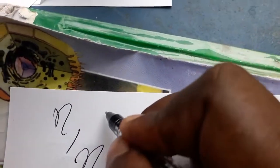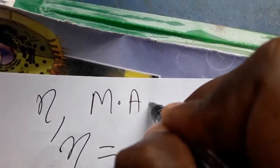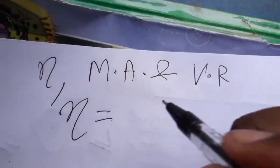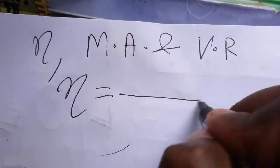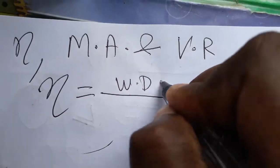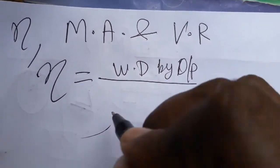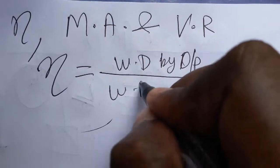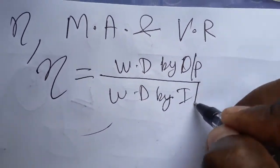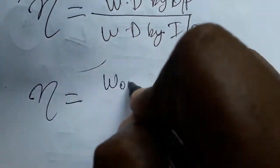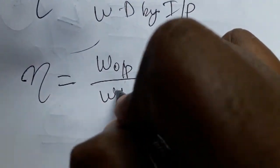Now we are going to see the relation between efficiency, mechanical advantage, and velocity ratio. Efficiency is work done by output divided by work done by input. So output by input gives us efficiency.